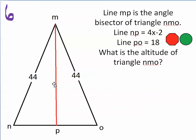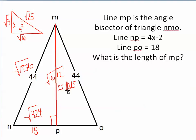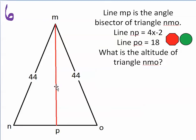Number 6 asks for the altitude of triangle NMO. The altitude and the angle bisector in this case are the same line — that red line. We already calculated that as 40.15 units. You had to recognize that the altitude and the angle bisector are the same thing here.